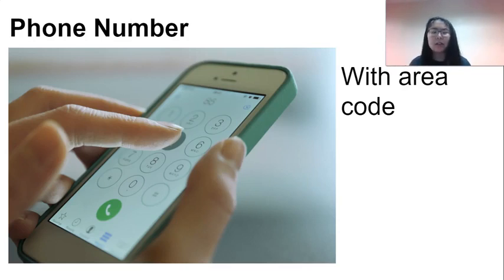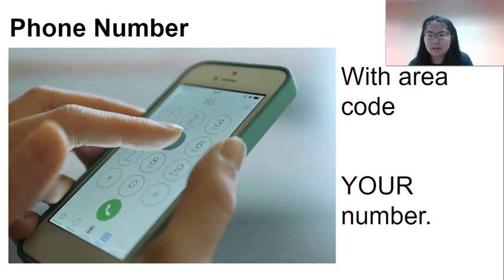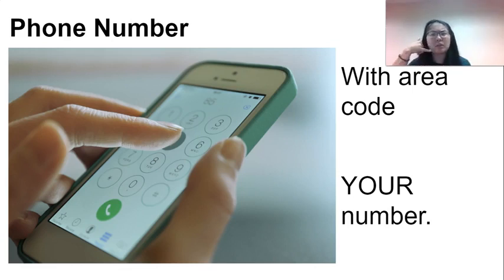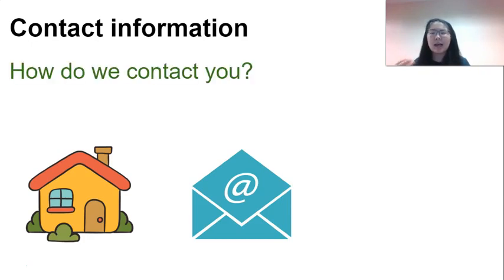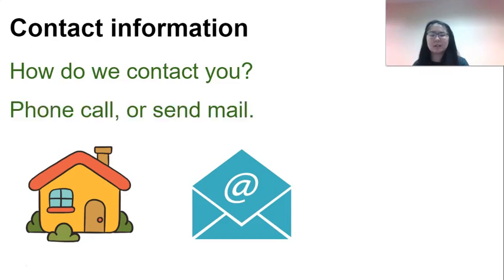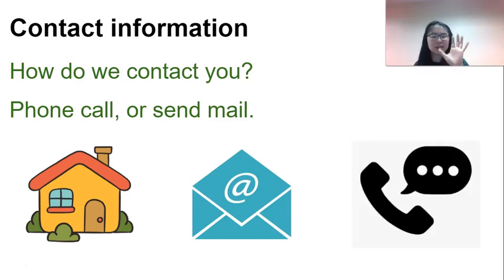With your phone number, you want to include the area code. In Pennsylvania, it's either 717 or 223. Make sure you give them your number — not your sister's, mother's, or boss's number. They need to be able to call you. If they give information to the wrong person, they can get in trouble. All of this together is called your contact information — how they contact you, call you, send email.